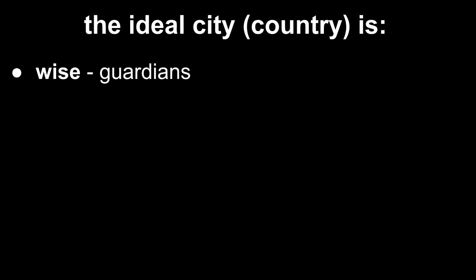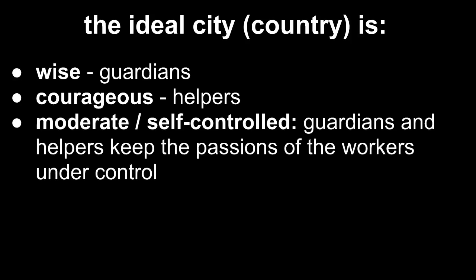Those are the three different types of people you see in an ideal city, according to him. An ideal city will be wise, because it contains these guardians, this elite ruling class. It'll be a courageous city, because it contains the helpers. It'll be able to fight and defend itself, and so on. And it will be a moderate, that is, self-controlled city, because the guardians and helpers keep the passions of the workers under control.